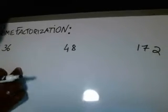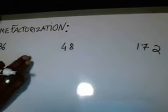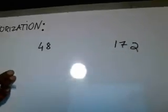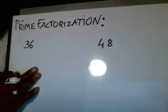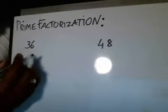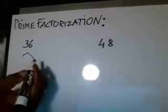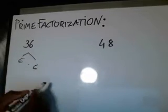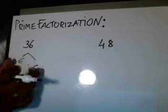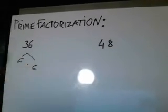Prime factorization means break down the number into all the prime numbers that constitute it. So for example, 36. First thing I'll do — I like using the trees, I like doing everything in a simple method. 36 is really 6 times 6. So now you're going to look at those two numbers and break down each of them into prime numbers.